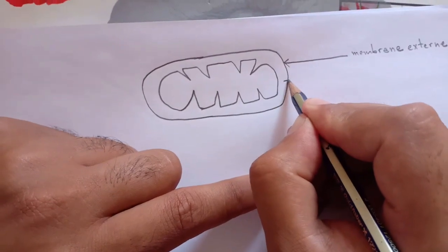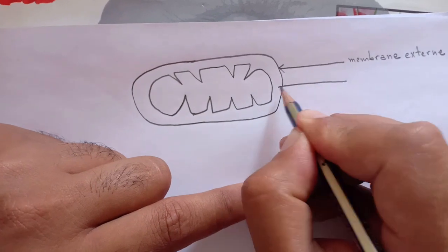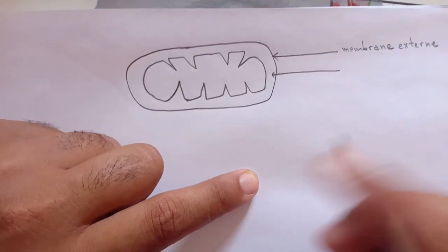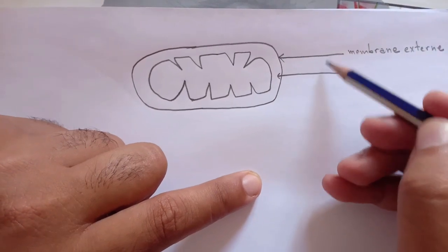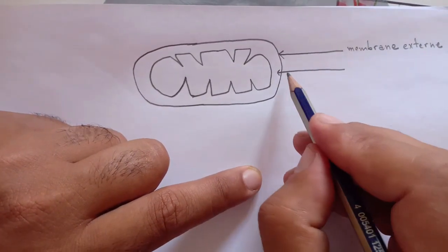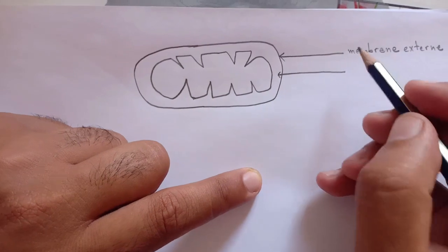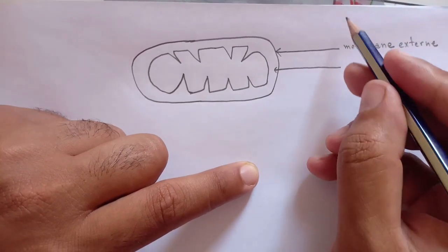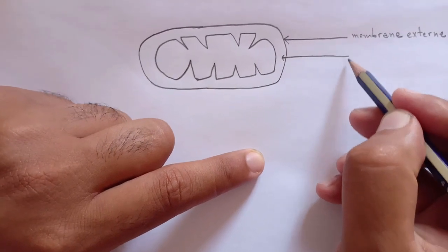Comme je l'ai déjà dit dans la vidéo précédente, les deux flèches doivent être parallèles et linéaires. Et leur terminaison doit être située sur le même niveau. Donc toutes les terminaisons doivent être situées sur ce niveau-là.